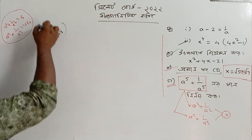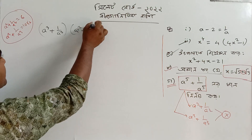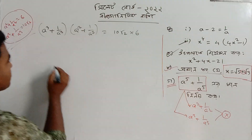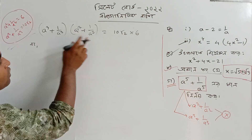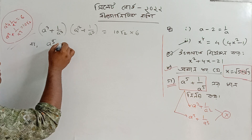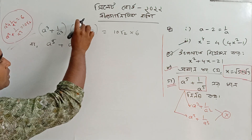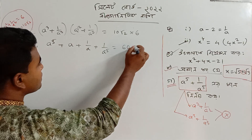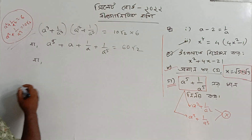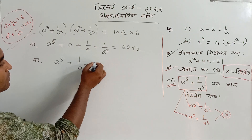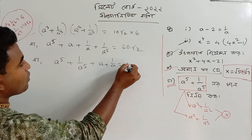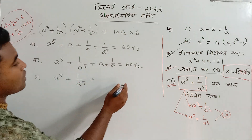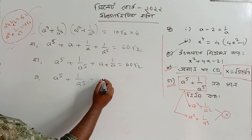Now A cubed plus 1 by A cubed, multiplied by A squared plus 1 by A squared. We have A plus 1 by A multiplied by A squared plus 1 by A squared, giving A⁵ plus 1 by A⁵ plus A plus 1 by A equal to 6 times 2√2. So A⁵ plus 1 by A⁵ equals 6.